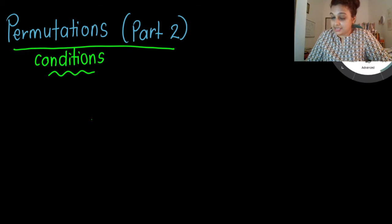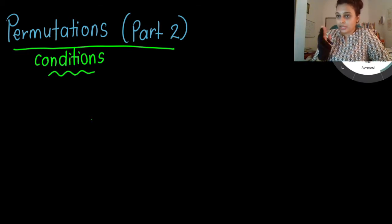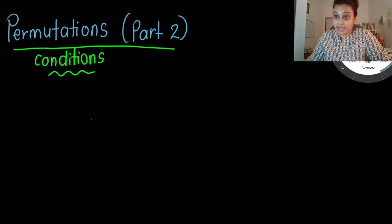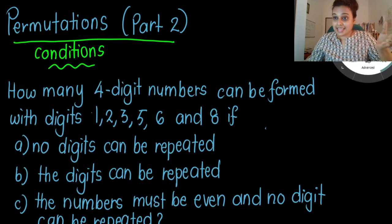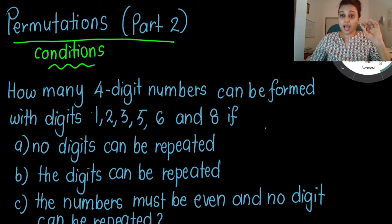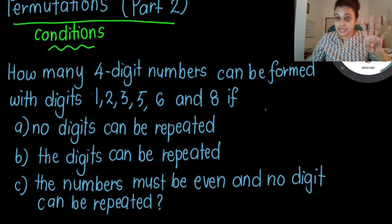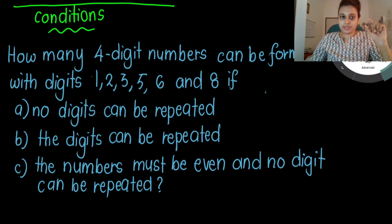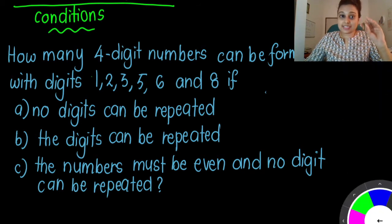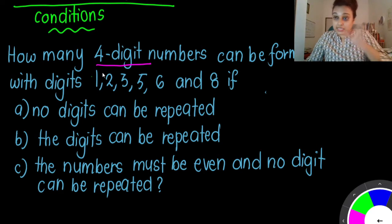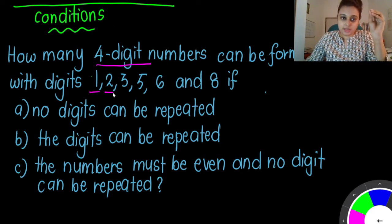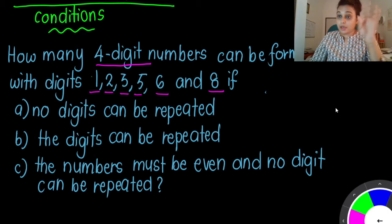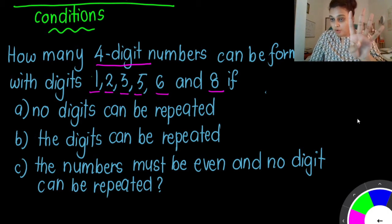So permutation is actually arranging, isn't it? Now let's look at one question where when you arrange they will tell you the condition first hand. How many four-digit numbers can be formed with digits 1, 2, 3, 5, 6, and 8? First, look at the question — they say four-digit numbers only. Here how many digits have they given us? They've given us 1, 2, 3, 4, 5, 6 — so 6 digits given, but you are only going to form 4.